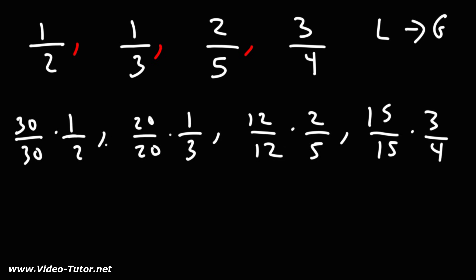So 30 over 30 times 1 over 2, you could just look at the numerators, multiply across. We're going to get 30 and 30 times 2 is 60. Here we have 20 and 20 times 3 is 60.